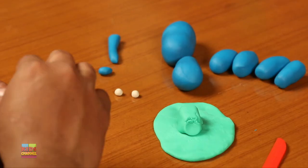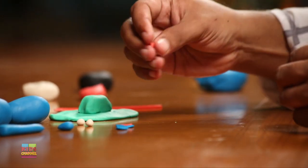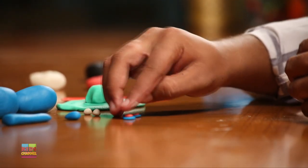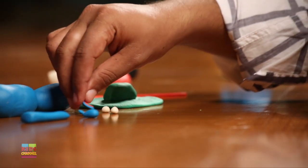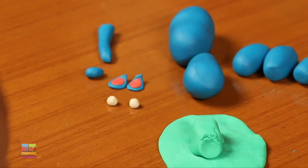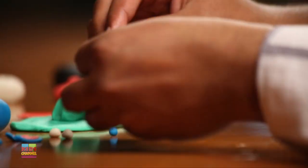Now take some orange Play-Doh and make two balls out of that. You can just press with your thumb and forefinger to flatten it. Now let's take some more blue play-doh and make two small balls again.